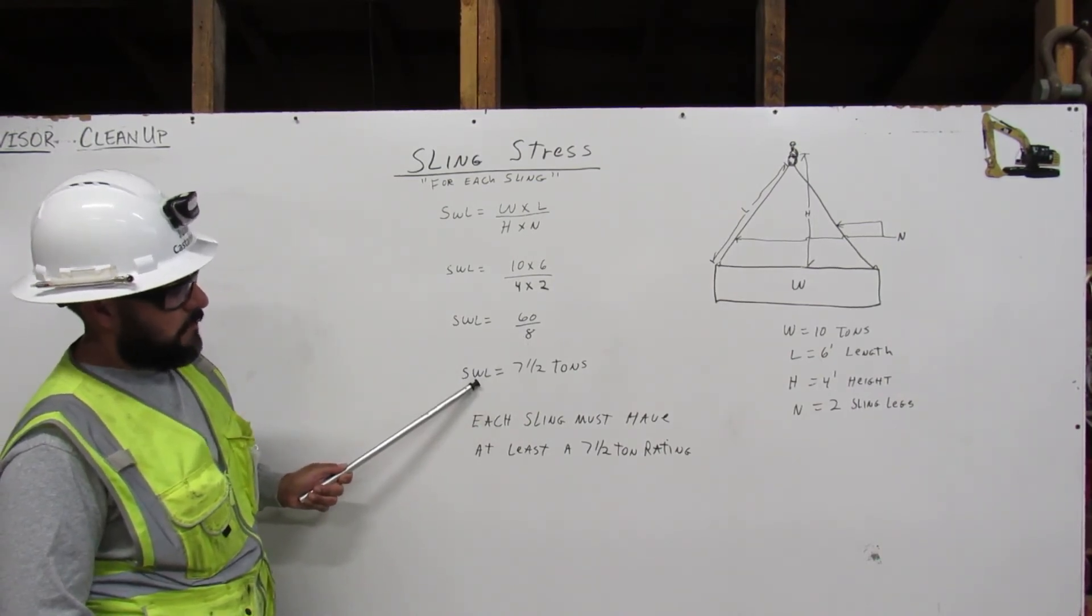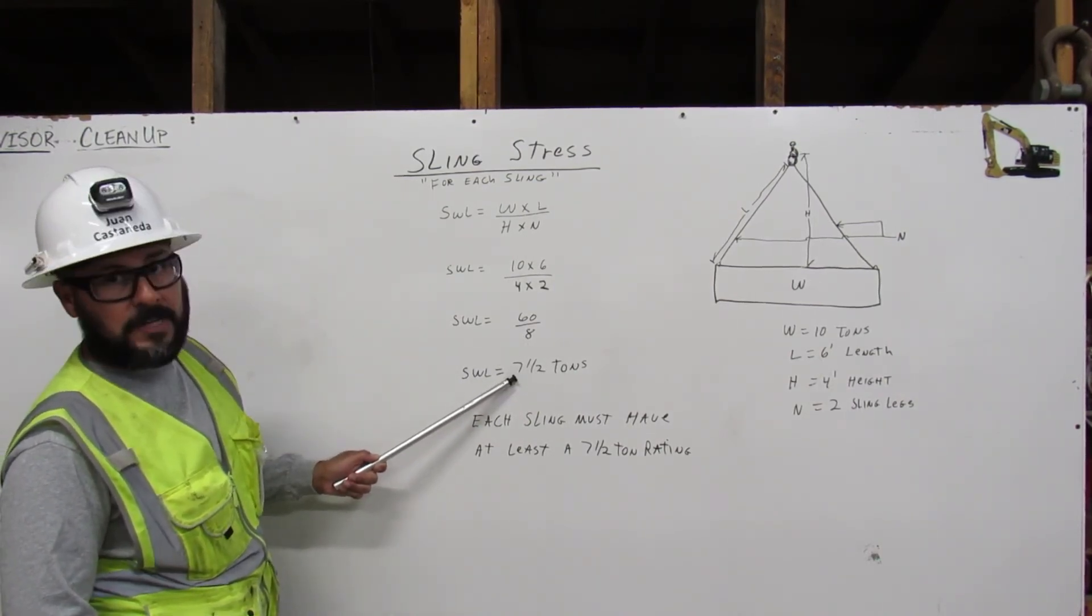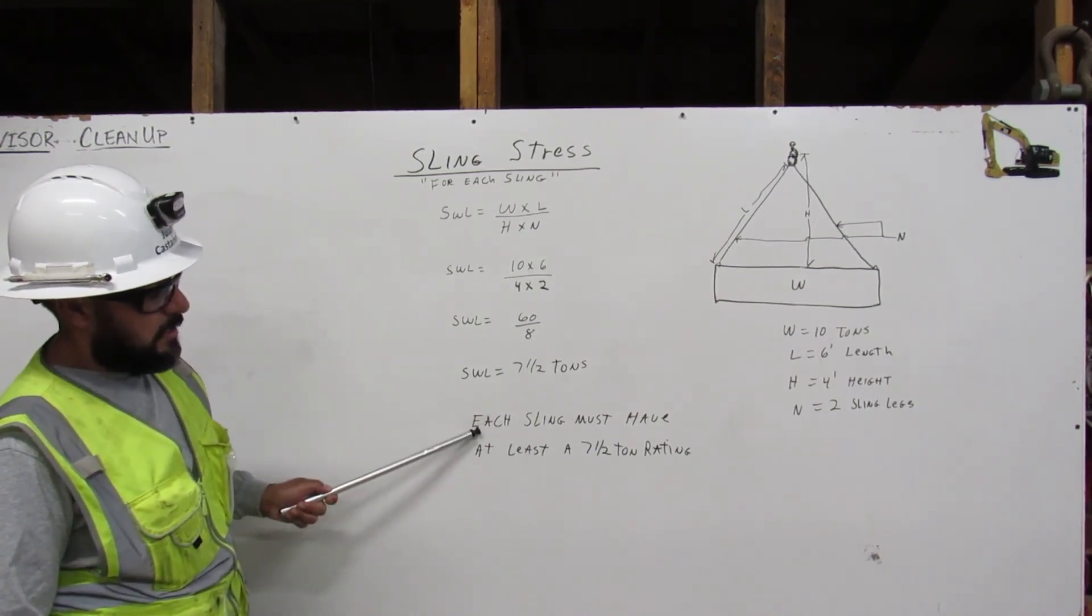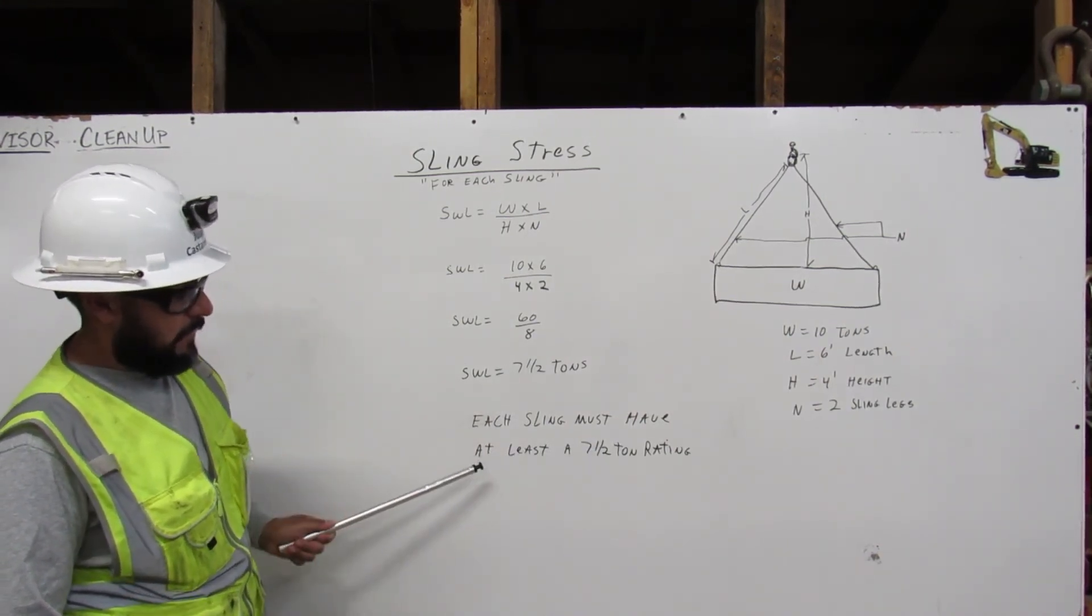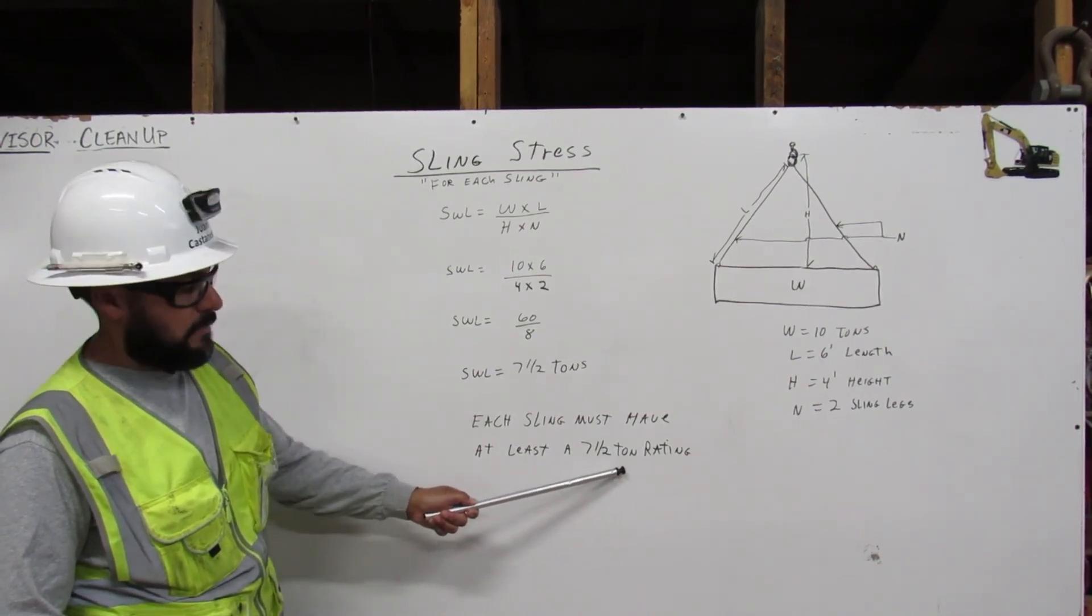Your answer is, for a safe working load, 7 and a half tons. Each sling must have at least a 7 and a half ton rating.